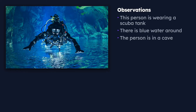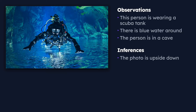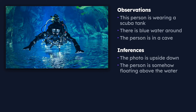For inferences, we focus on what is happening in this picture — it looks kind of strange. We might infer that the photo is actually upside down, because it looks like they're floating above the surface of the water, and we don't think a person can float above water, so maybe the photo is just flipped upside down. But maybe that's not true — maybe this person is somehow actually floating above the water.